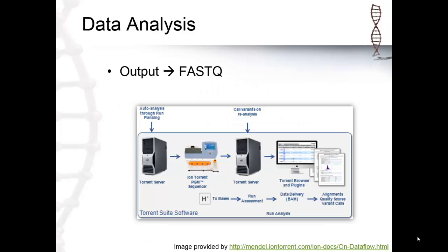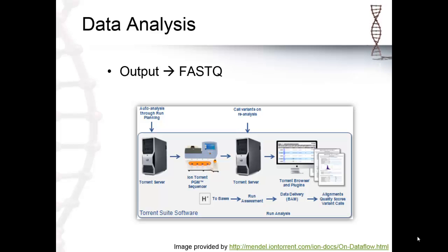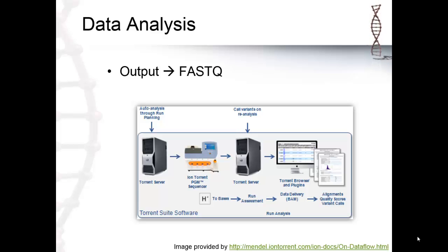As Ion Torrent systems generate standard output files like FASTQ, data analysis is generally straightforward. In addition to a variety of available third-party analysis solutions, Ion Torrent offers the Torrent Browser software, which acts as a primary interface for a number of basic functions. Ion Torrent has also launched a cloud-based solution called IonReporter, which serves as a front-end for a variety of open source analysis solutions.